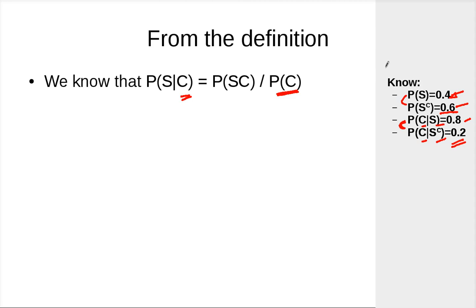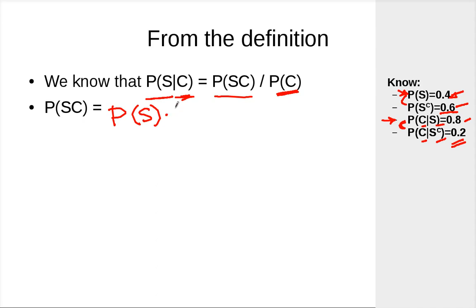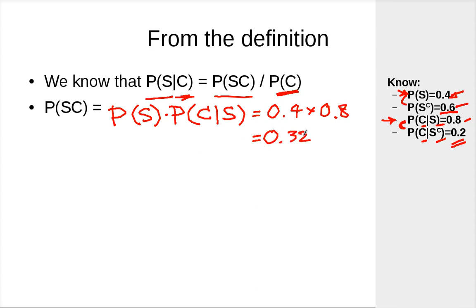Let's compute the probability that an email is spam, given that it contains the word 'cheap'. We need the probability that both events occur. We know P(S) and P(C|S). Using the definition of conditional probability, we can rewrite the intersection as P(S) times P(C|S). Plugging in, that's 0.4 times 0.8, which equals 0.32.